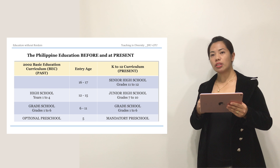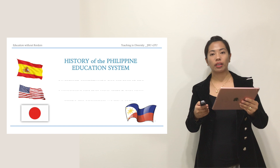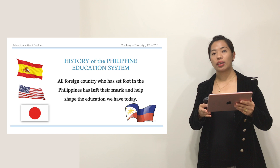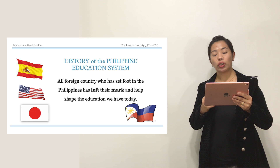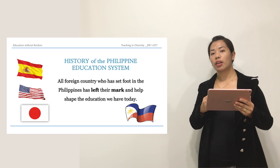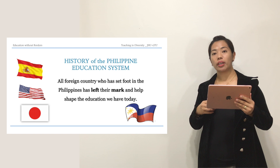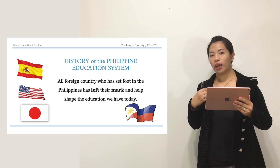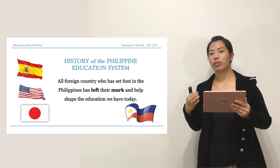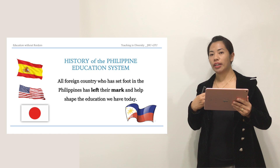In recap, all of the foreign countries that set foot in the Philippines — Spain, America, and Japan — left their mark and helped shape the education we have today, most dominantly the Americans. In the next part of the lecture, the pros and cons of the different colonizers and how they affected the Philippine education system will be discussed.